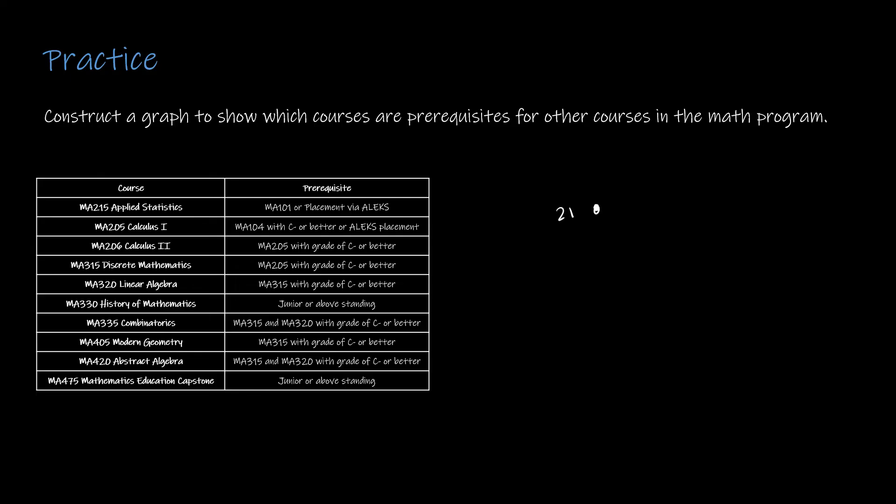To get started, it's a good idea to create a vertex for each course. I'm just skipping the MA prefix for the sake of not having to write MA a bunch of times. So we have 315, 320, 330, and so on through 475.